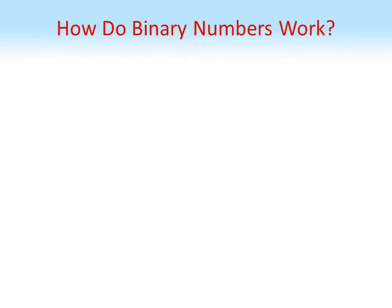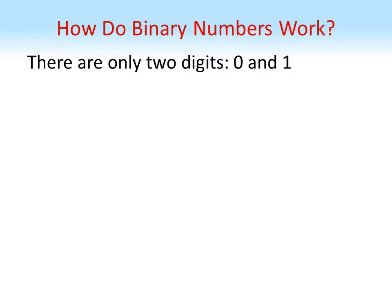So how do binary numbers differ? In the binary system, there are only two digits: 0 and 1. We start off the same way as decimal with 0 and 1, but when we get to 2, we have a problem — in binary we can only use 0 and 1, so we need to create a new column to the left and put a 1 there, resetting the right-hand column to 0. For 3, we increase the right-hand column to 1. For 4, we've filled our existing columns with ones, so we reset these and create another column on the left, then continue counting from the right-hand column again.